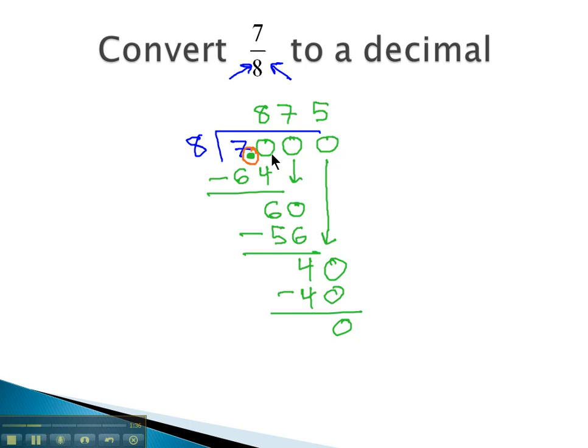Again, because we lined everything up, the decimal can come straight up into our answer, and we have 0.875, or 875 thousandths, is the decimal that's equivalent to 7 eighths.